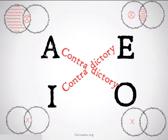Next we're going to put in our contradictory relationships. These are the relationships that we found in our modern square of opposition, and they're going to hold as well in the traditional square. But instead of just having everything else be undetermined, we're going to actually have some more relationships here.